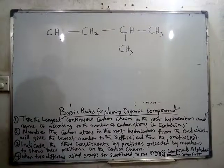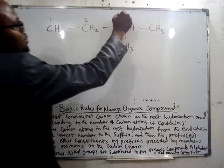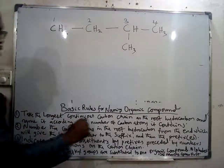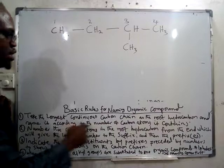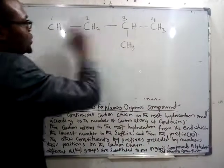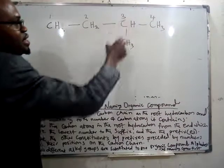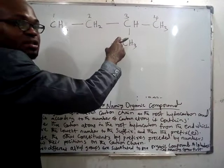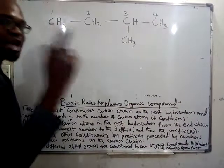So how do you name this? Are you going to start naming from here? Are you going to name it as one, two, three? The first rule says take the longest chain — longest continuous chain as the root hydrocarbon — and name it according to the number of carbon atoms. So take the longest. This one isn't the longest; it's short, composed of only two. The rule says take the longest.